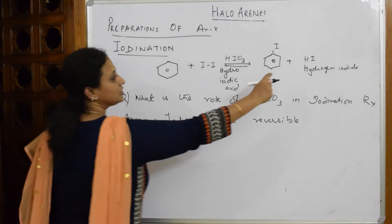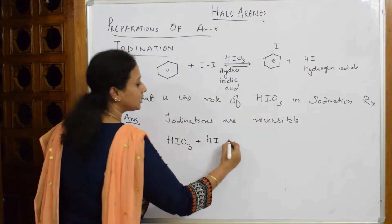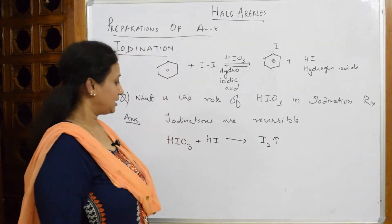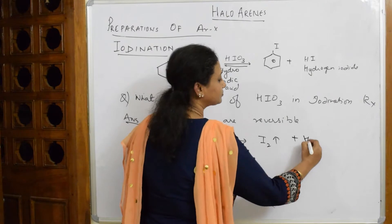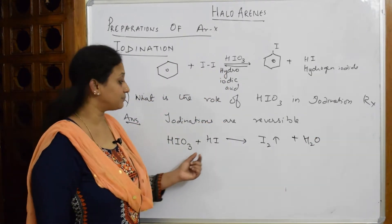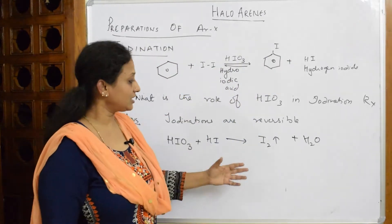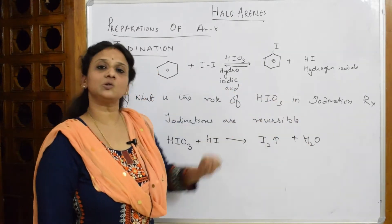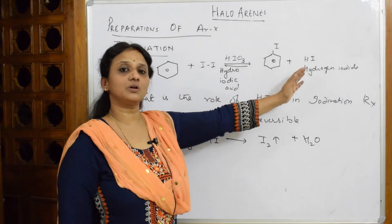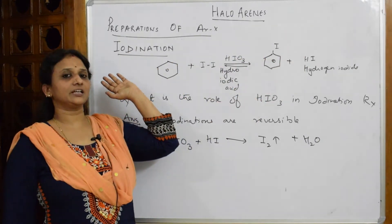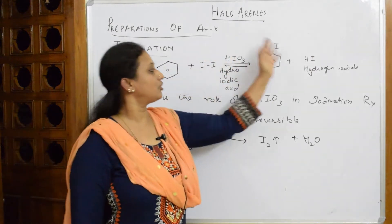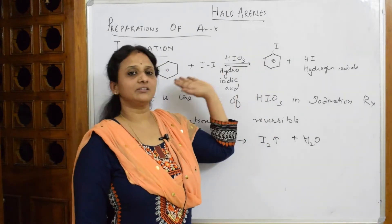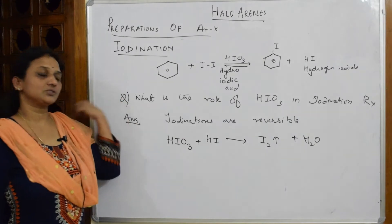The role of HIO₃ is as follows: HIO₃ combines with the HI that is produced in the reaction. When HIO₃ combines with HI, iodine vapors are released and water is formed as the leftover. By doing this, HIO₃ removes HI from the reaction mixture, preventing the reverse reaction from occurring and forcing the equilibrium in the forward direction.